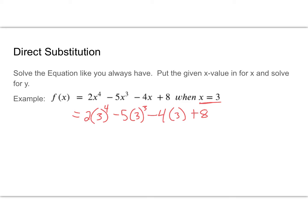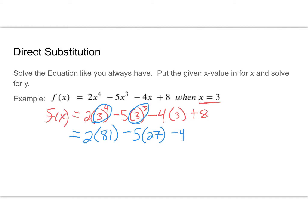To continue, we're going to solve for f of x, or y. Order of operations — PEMDAS — says we've got to do the exponents first. So we're going to have 2 times 3 to the 4th, which is 81, and 3 cubed, which is 27.